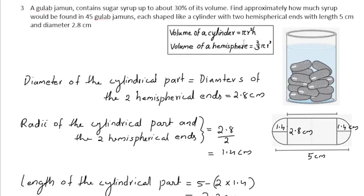Volume of the cylinder is πr²h and the volume of the hemisphere is 2/3 πr³.